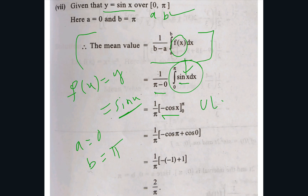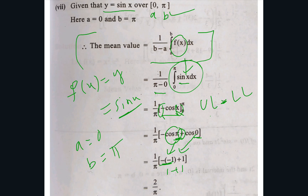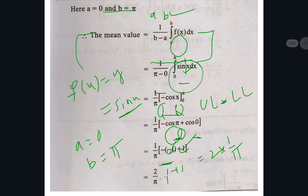The integral of sin(x) dx is −cos(x). After integration, substitute upper limit minus lower limit: −cos(π) minus −cos(0). cos(π) is −1, so minus of −1 becomes +1; cos(0) is 1, and minus of minus becomes +1. So 1 + 1 = 2. Then 2 times 1/π gives 2/π as the answer.